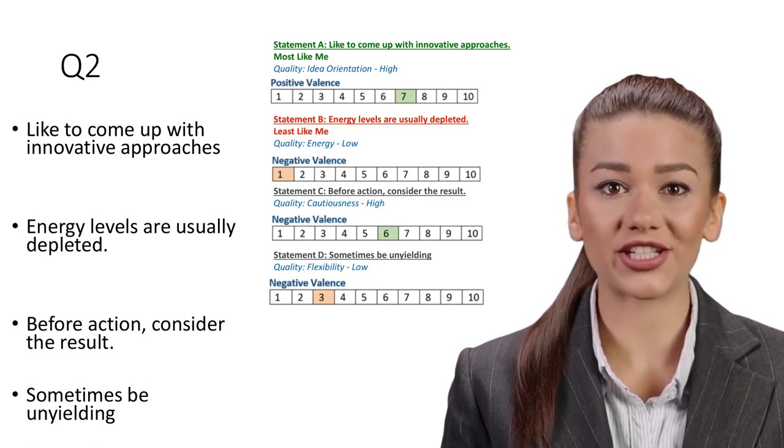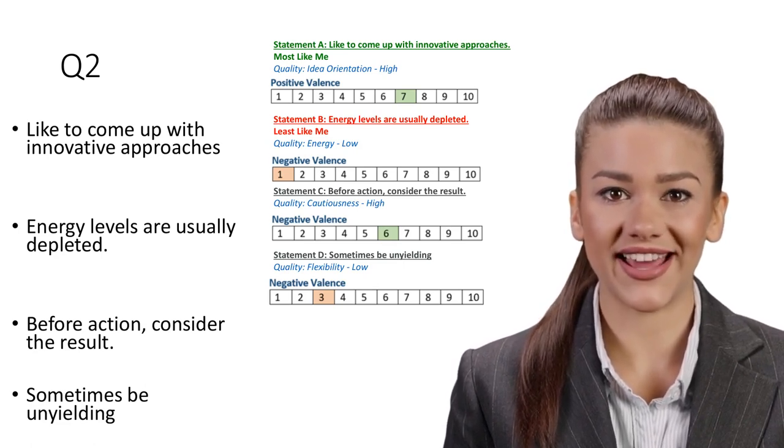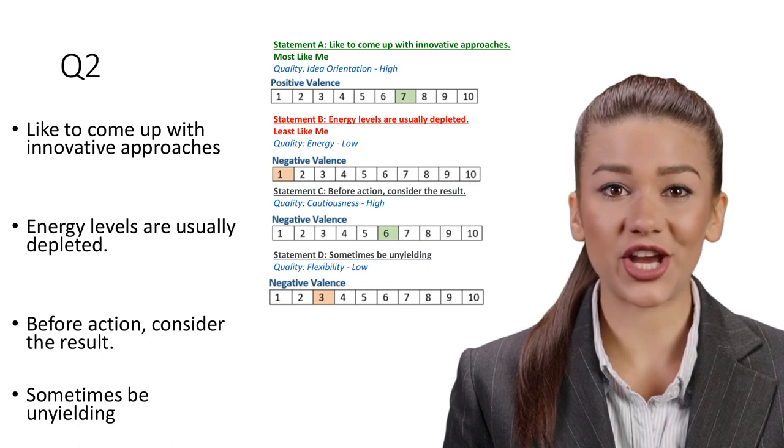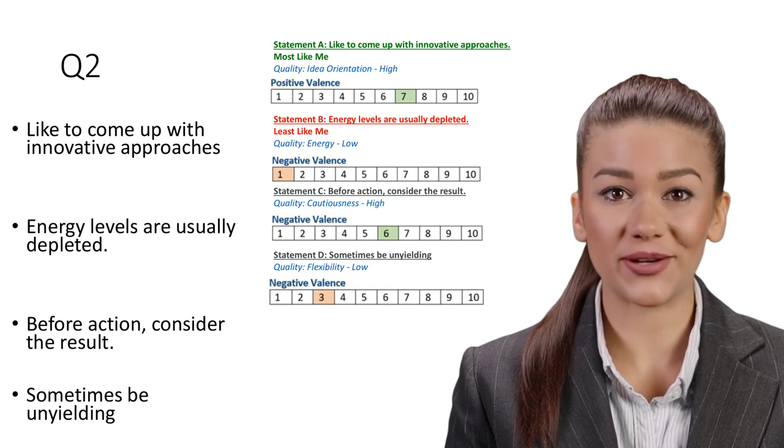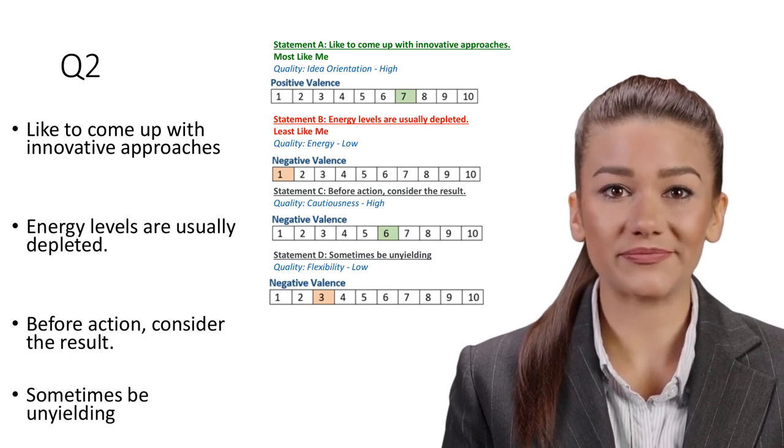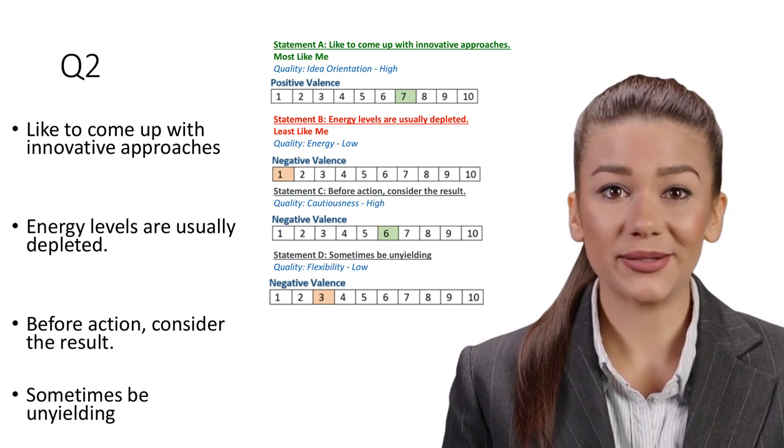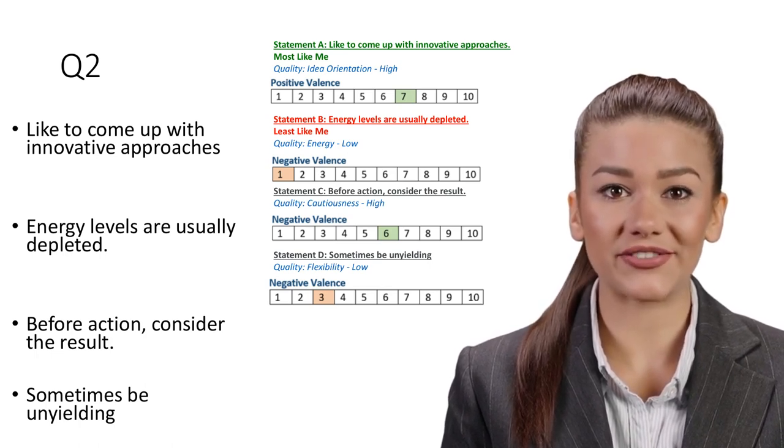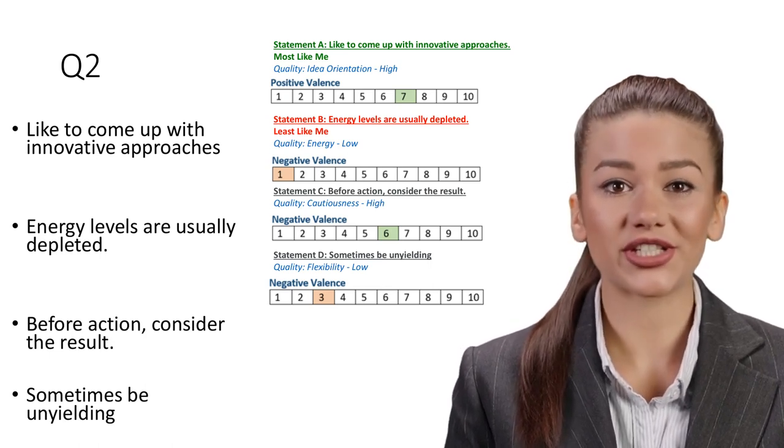Statement C: Before action, consider the result. Quality: Cautiousness, High. At work, cautious individuals tend to default to what they have already seen works and might be suspicious of new or unproven processes and tools. This cautiousness can be limiting if no balance is applied. This statement on cautiousness is equally positive to statement B that covers energy. This quality will thus be allocated points in other questions.